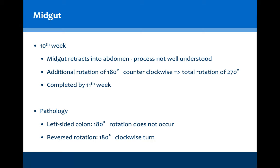The rotation of the midgut is commonly assessed as a quick way to differentiate between medical school candidates. However, the process of retraction is not well understood — it is not known if the growth of the abdominal cavity catches up or if there is an active retraction occurring. Pathologies from issues with this rotation include a left-sided colon where the 180-degree rotation does not occur, or a reversed rotation where instead of a counterclockwise turn, a 180-degree clockwise turn happens, leading to misalignment of the duodenum and the transverse colon and gastric outflow obstructive symptoms.